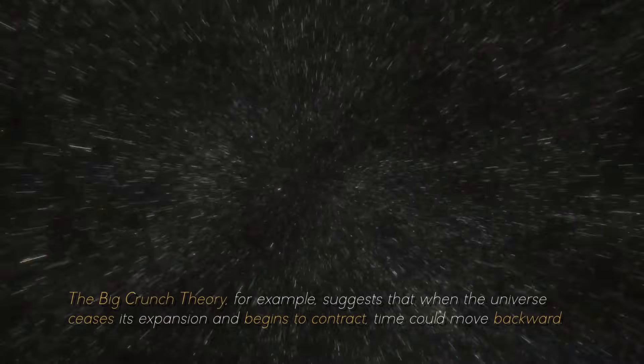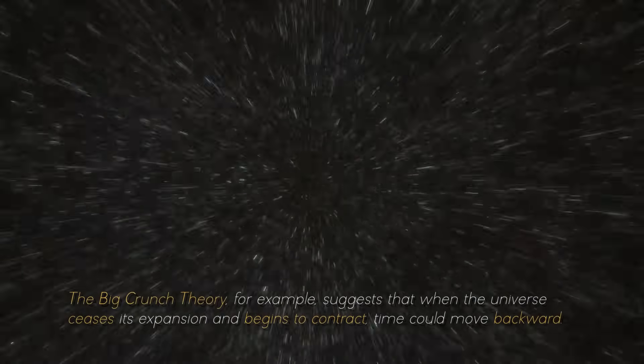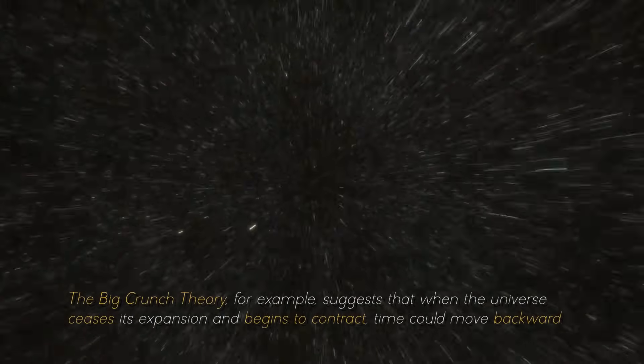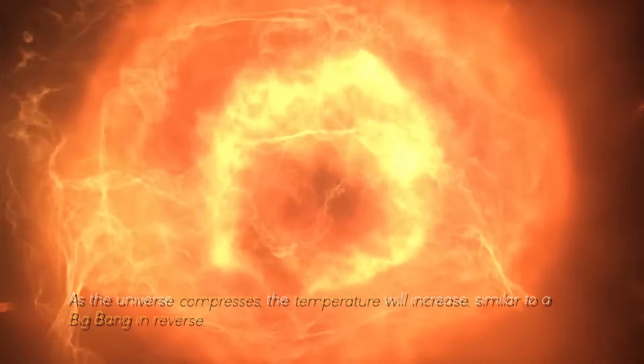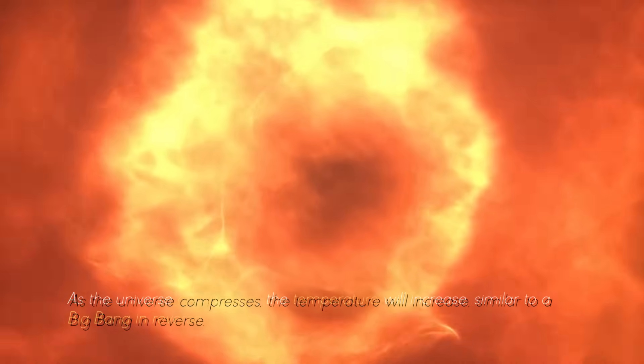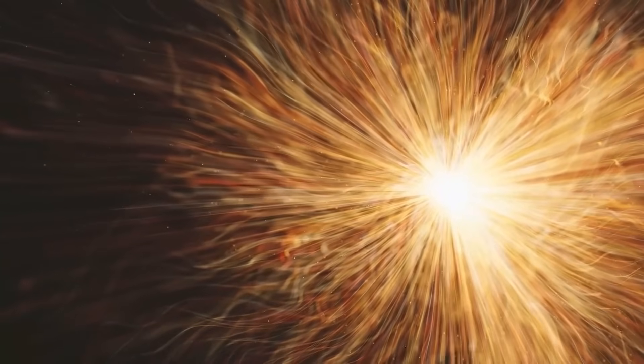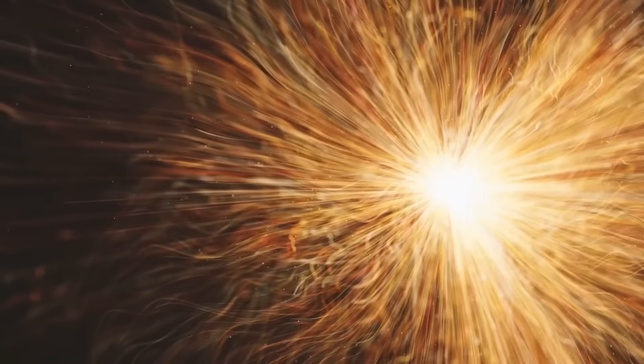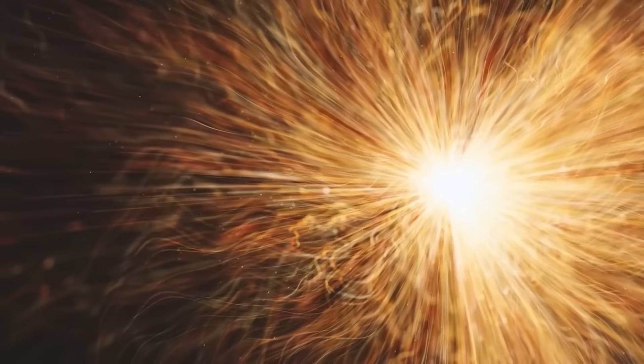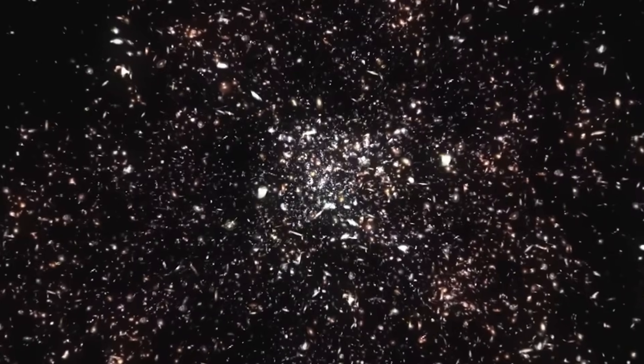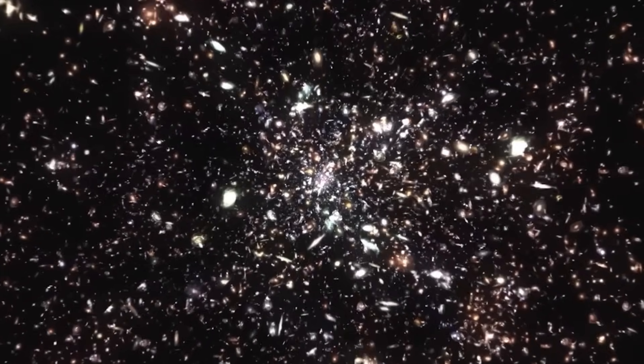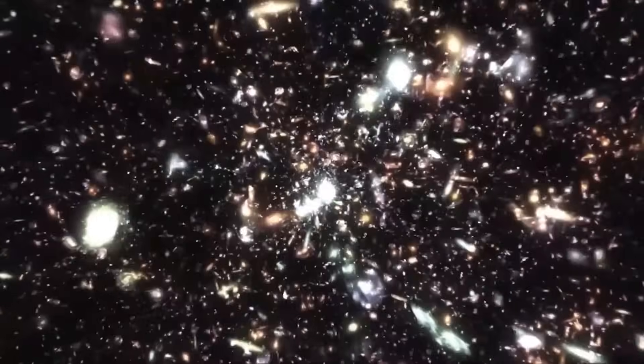The Big Crunch theory, for example, suggests that when the universe ceases its expansion and begins to contract, time could move backward. As the universe compresses, the temperature will increase, similar to a Big Bang in reverse. Now, what happens after the Big Crunch is a question that has puzzled many of us. Several theories raise the possibility that a new universe could arise from another Big Bang, while others suggest that our universe could reappear at another point, as if it were a cosmic bubble. There are even hypotheses that this cycle could repeat itself over and over again, giving rise to countless universes.